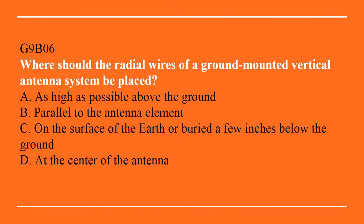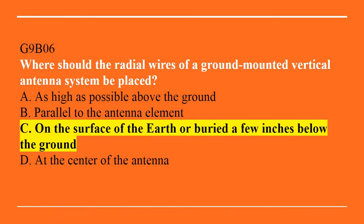G9B06: Where should radial wires of a ground-mounted vertical antenna system be placed? A. As high as possible above the ground. B. Parallel to the antenna element. C. On the surface of the earth or buried a few inches below the ground. Or D. At the center of the antenna. The answer is C — on the surface of the earth or buried a few inches below the ground.